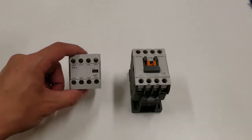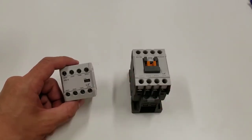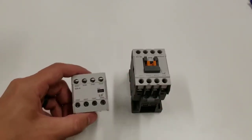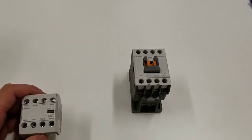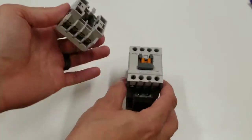You could put these front mount auxiliaries on there whether you are already using these side mount auxiliaries and you need additional ones, or there's not enough room on either side of the contactor. So if you look at the bottom of this, it just kind of slides on.